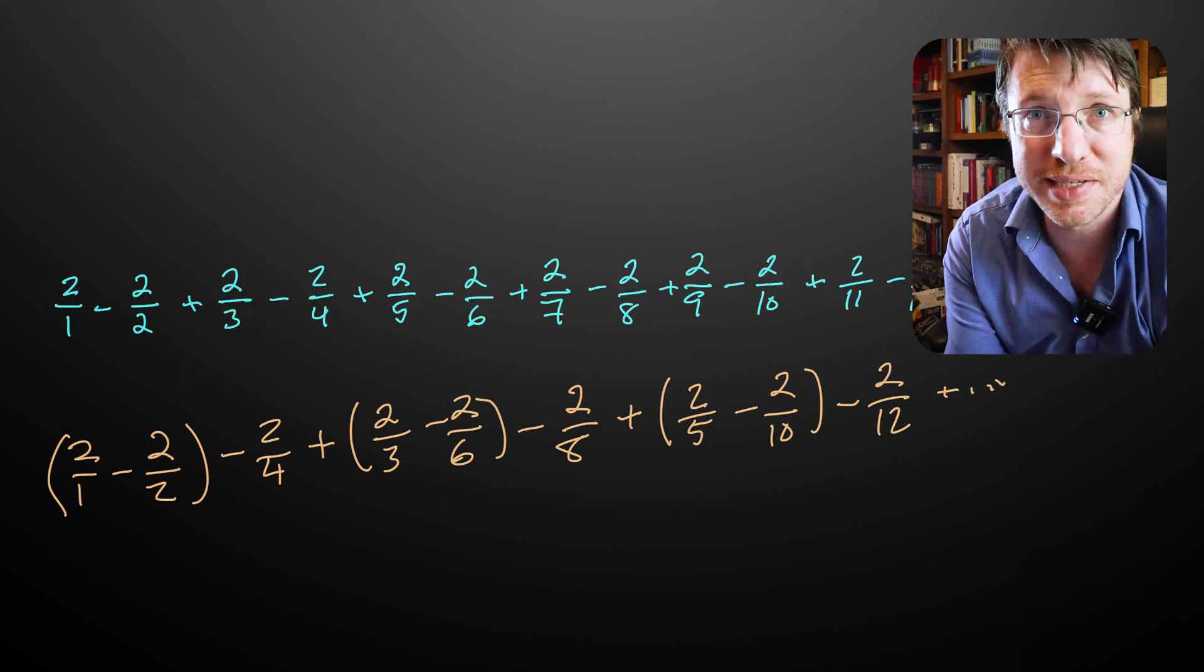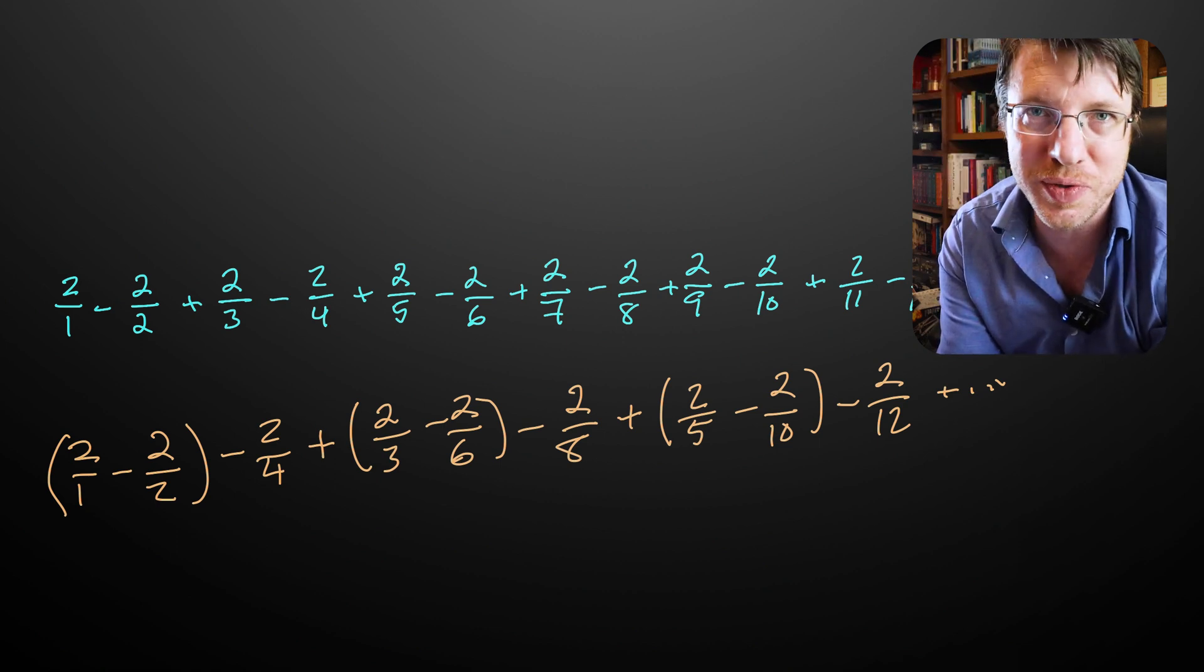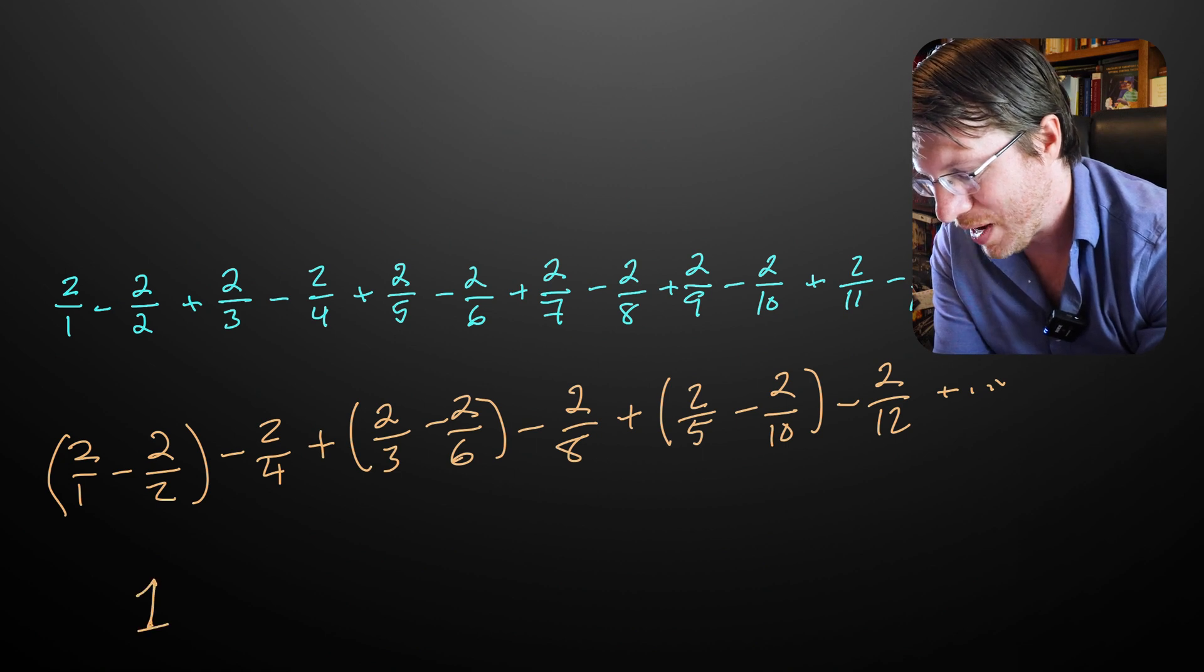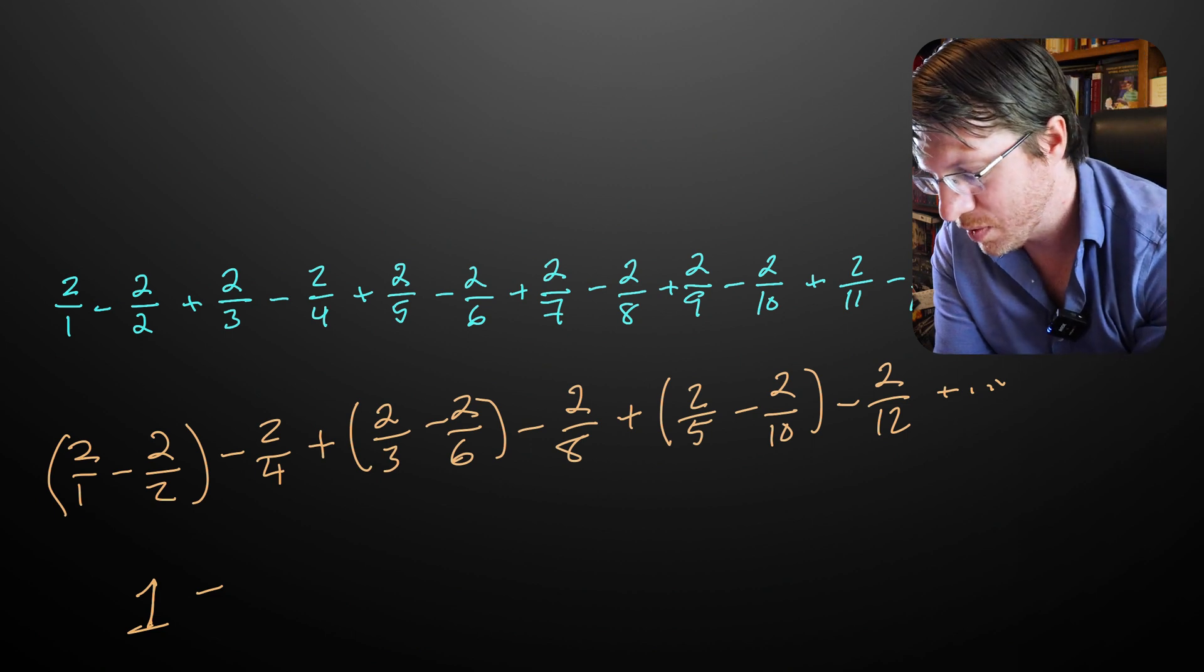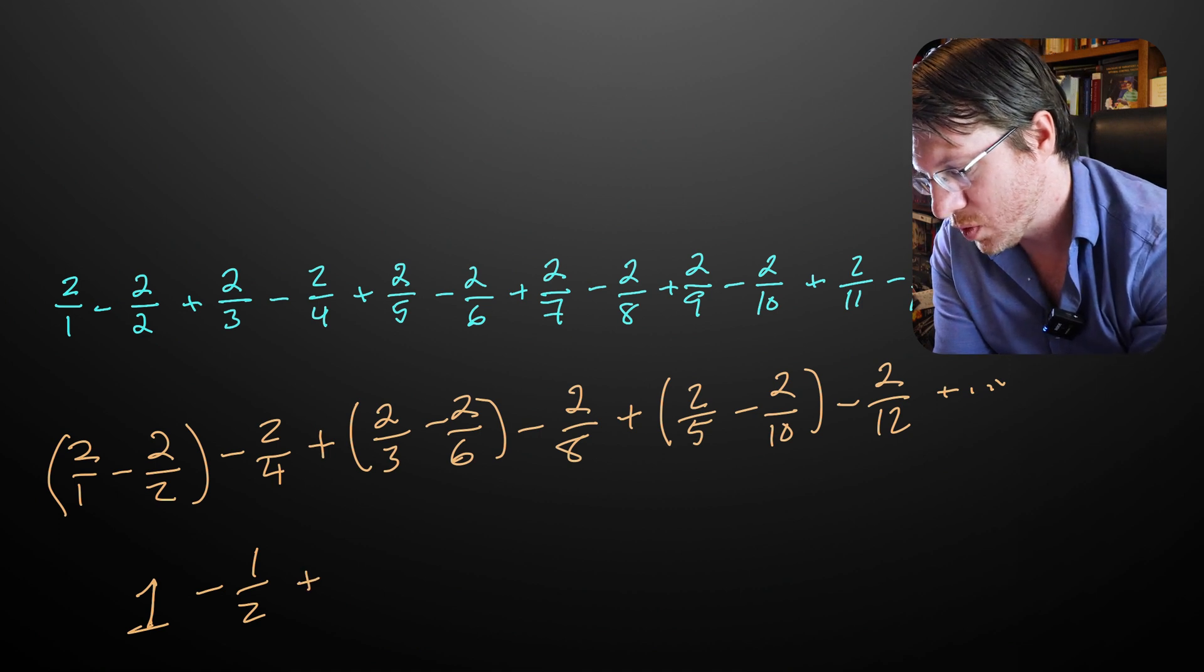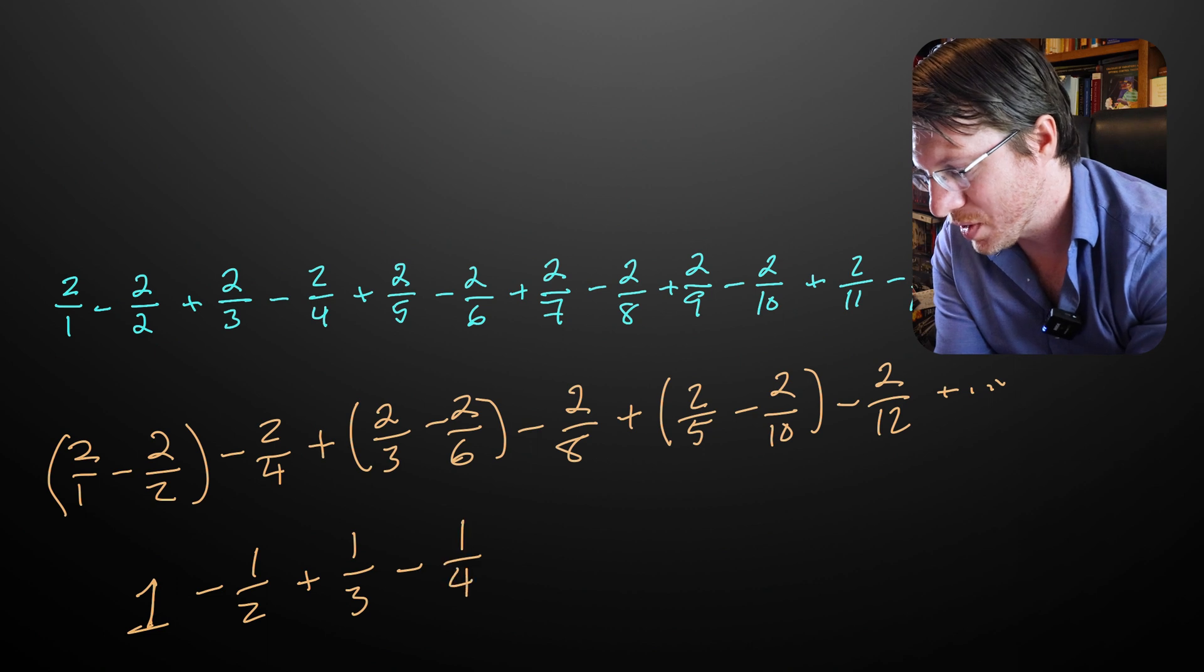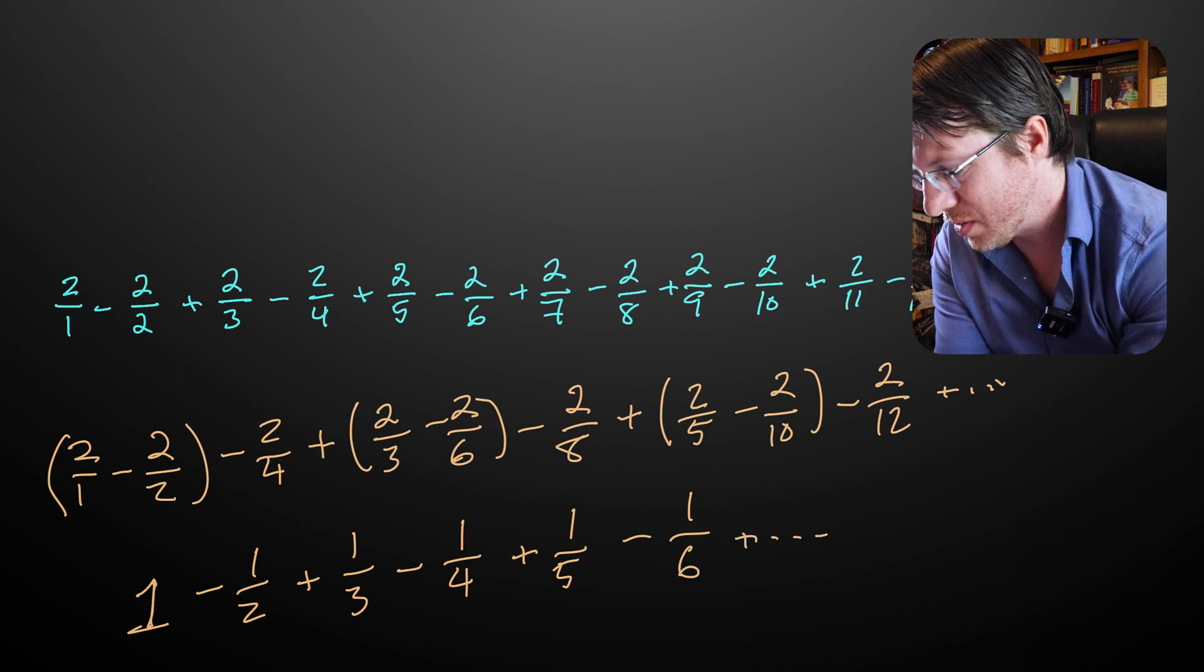So what we're going to have is we have now the 2 over 1 minus the 2 over 2. Now this guy here becomes minus 2 over 4. Then plus 2 over 3 minus 2 over 6. And then minus 2 over 8. Then plus 2 over 5 minus 2 over 10. And then minus 2 over 12, et cetera.